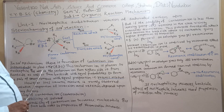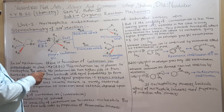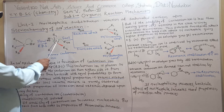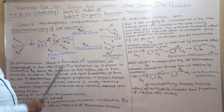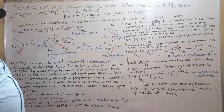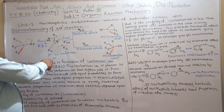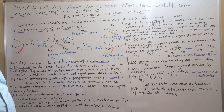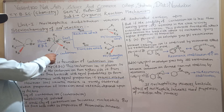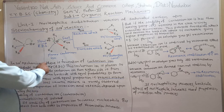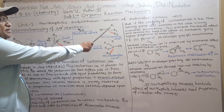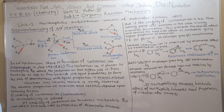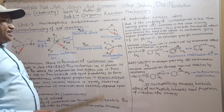In other words, if the leaving group remains in the close vicinity of the carbonium ion, there is repulsion between the negative charge of the nucleophile OH and the negative charge of the leaving group Br. This prevents the front-side attack of the nucleophile and favors the back-side attack, and we get a greater percentage of inversion of configuration if the stability of the carbonium ion is less.